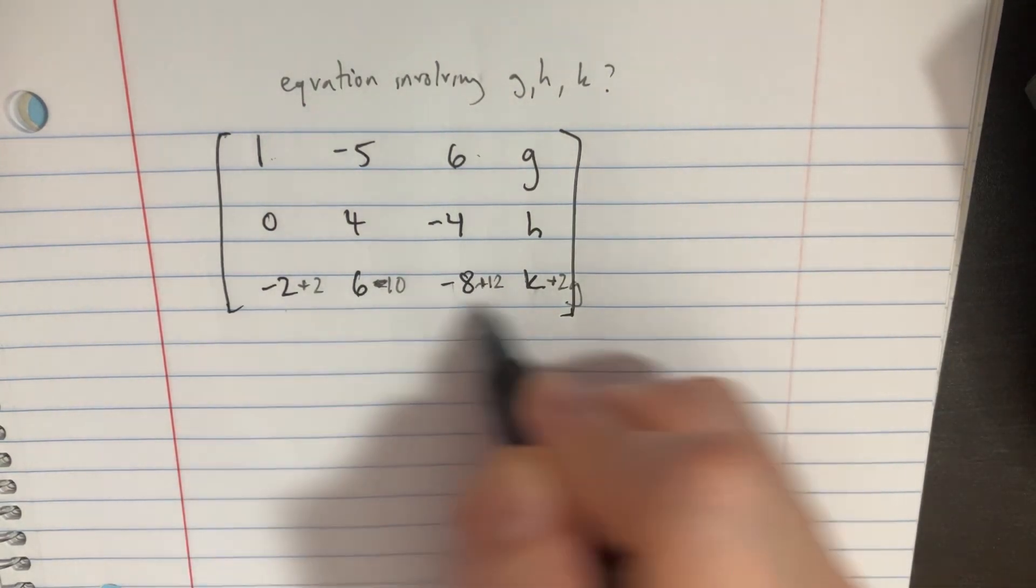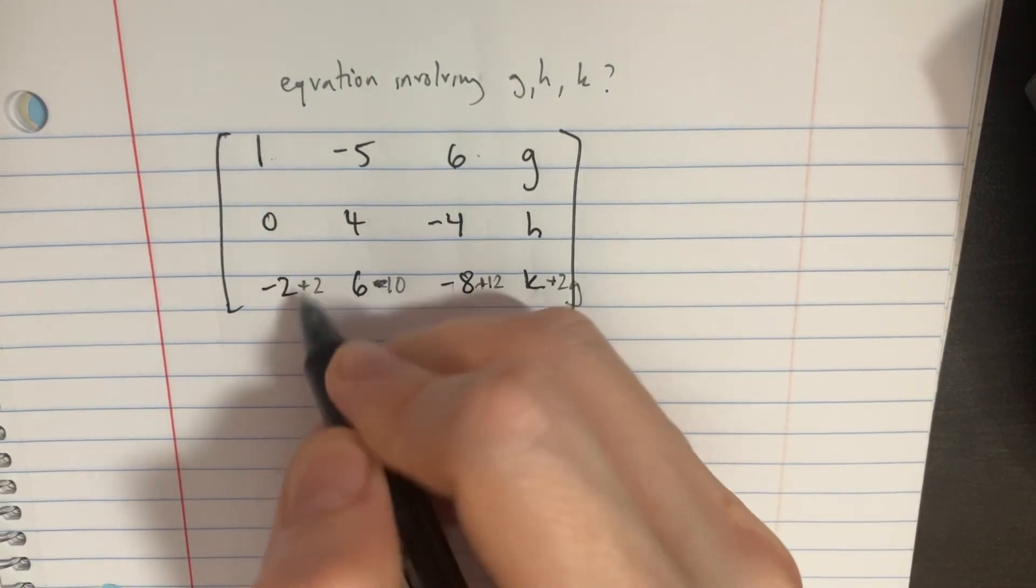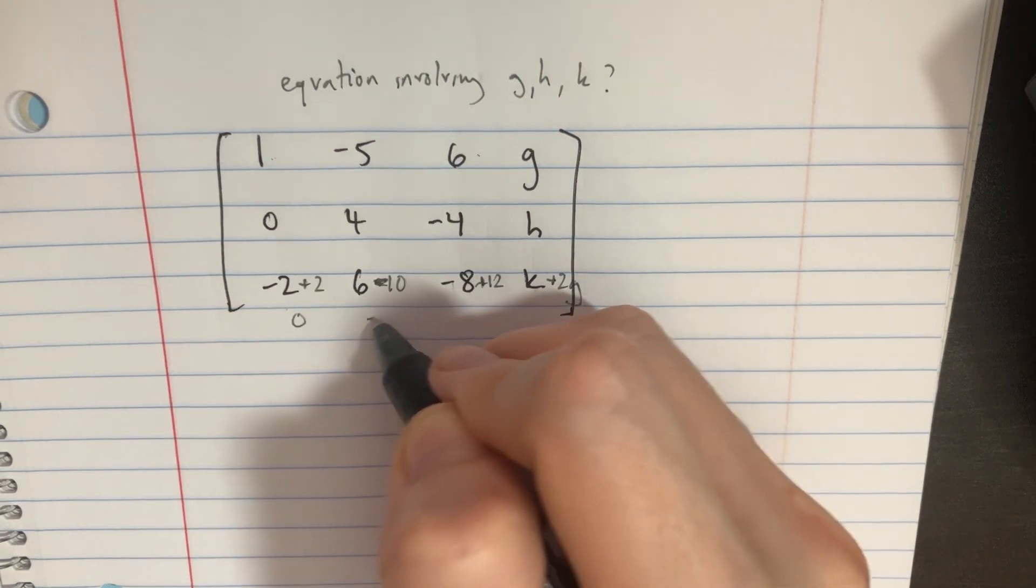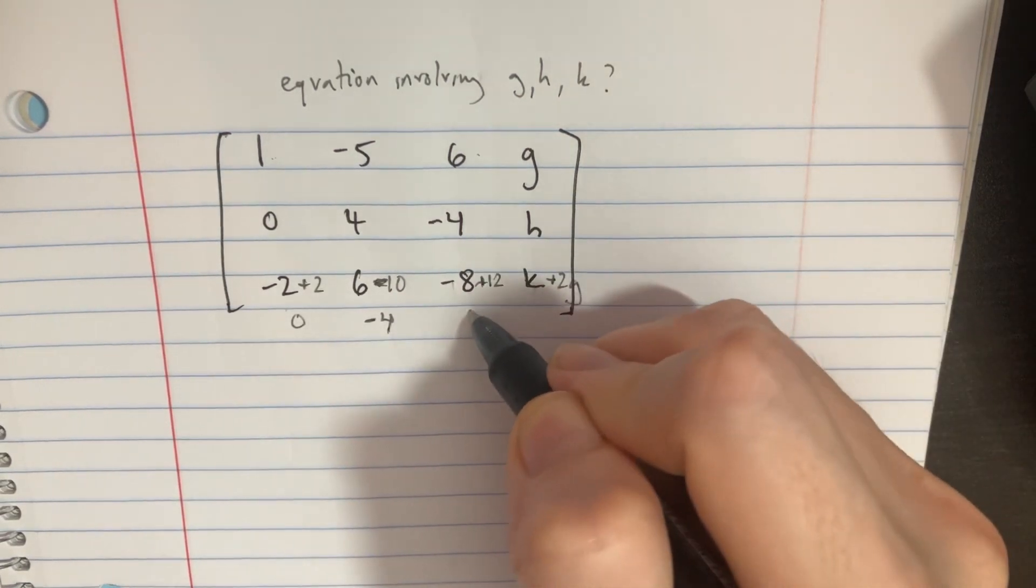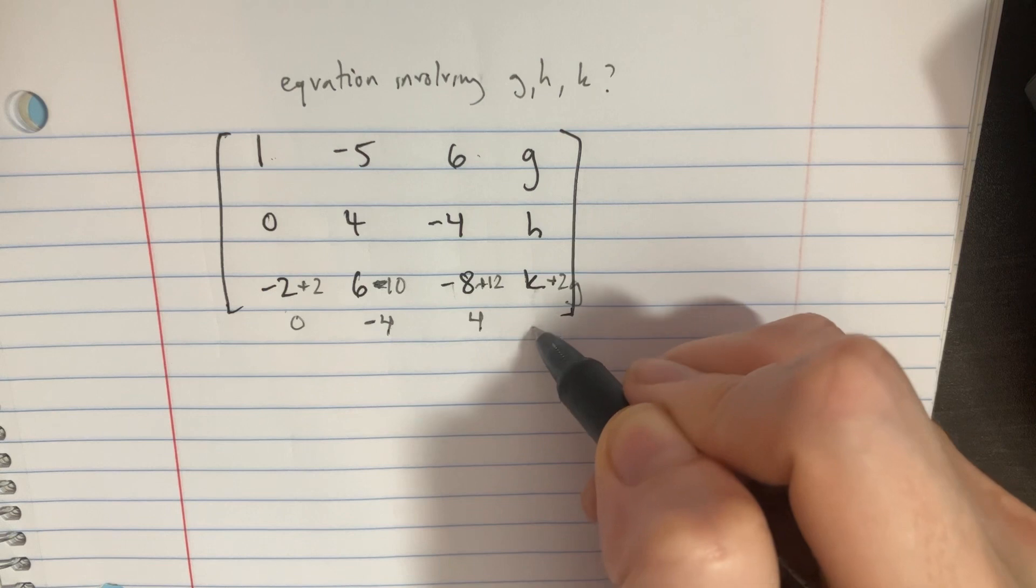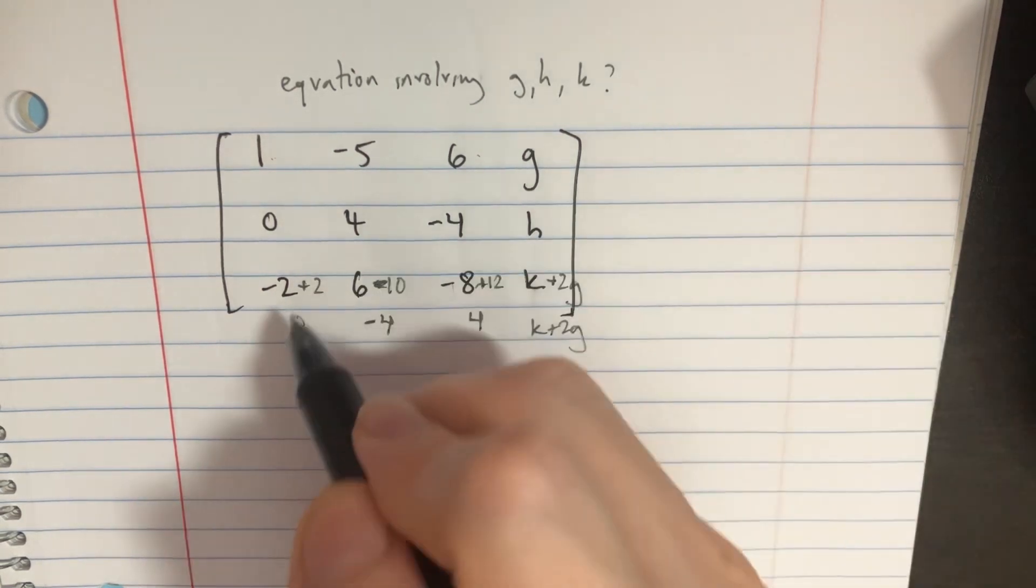Okay, so if we rewrite this, we could say 0, and this would be negative 4, this would be 4, and then this would be k plus 2g at the bottom here.